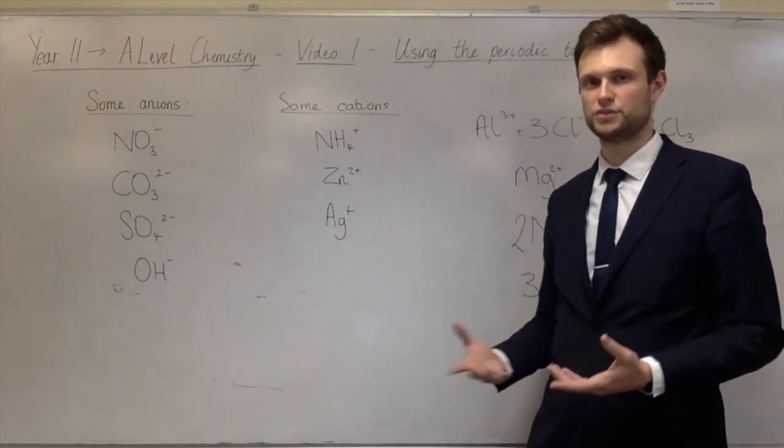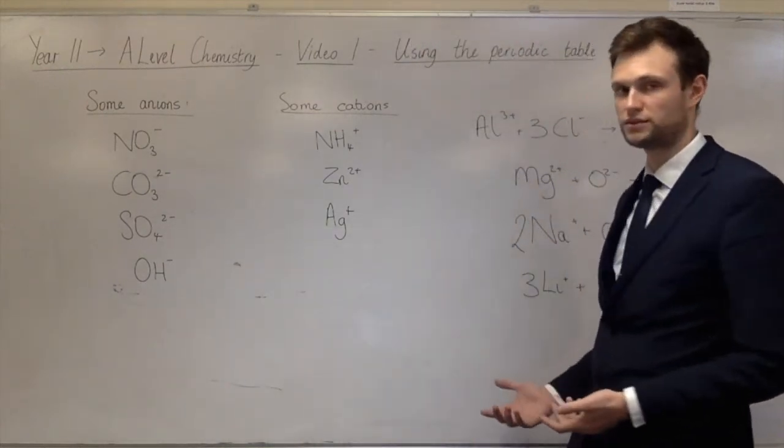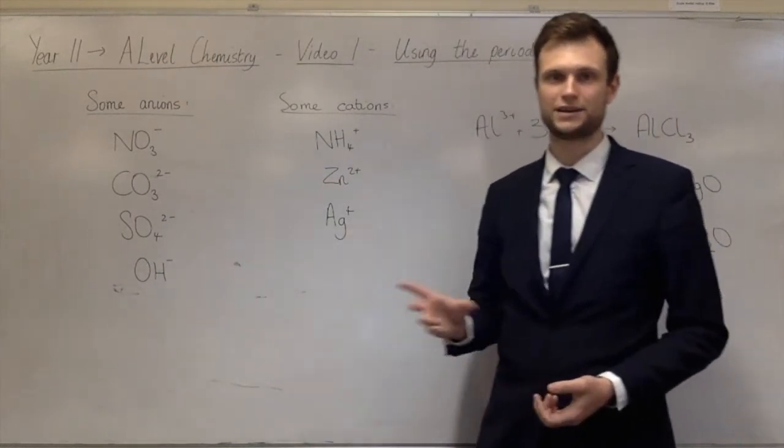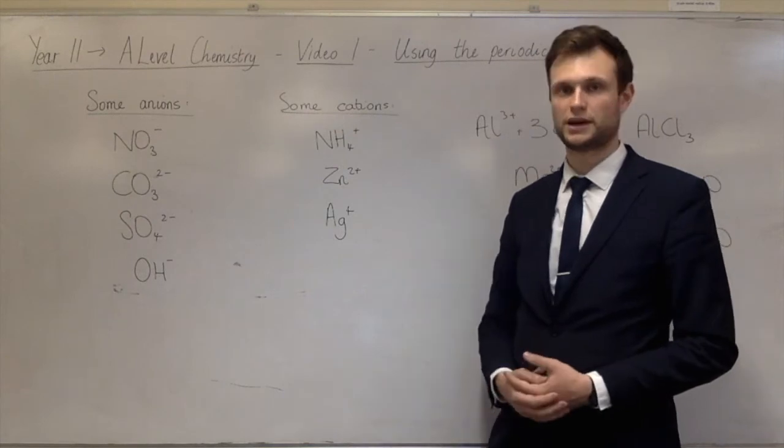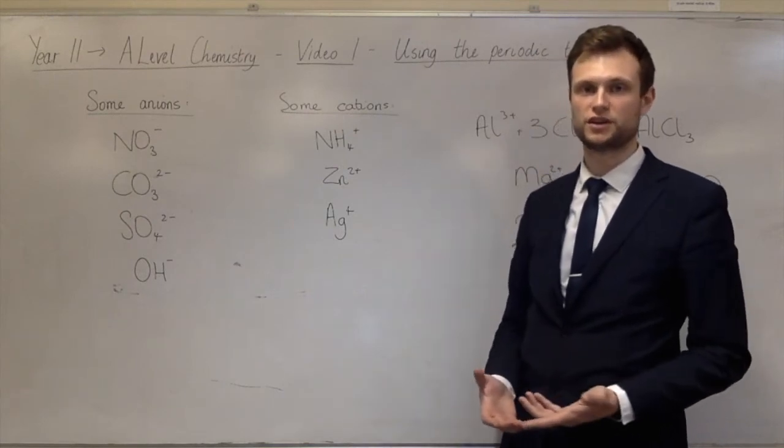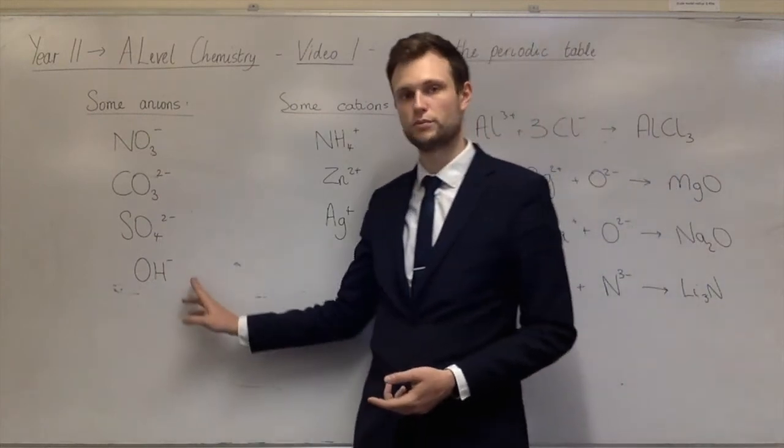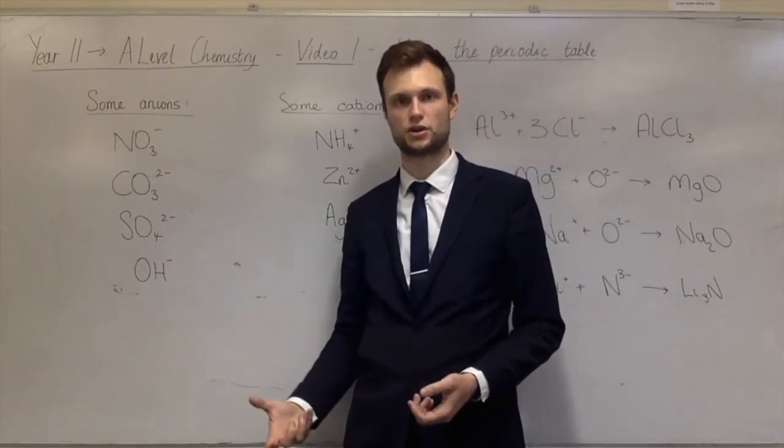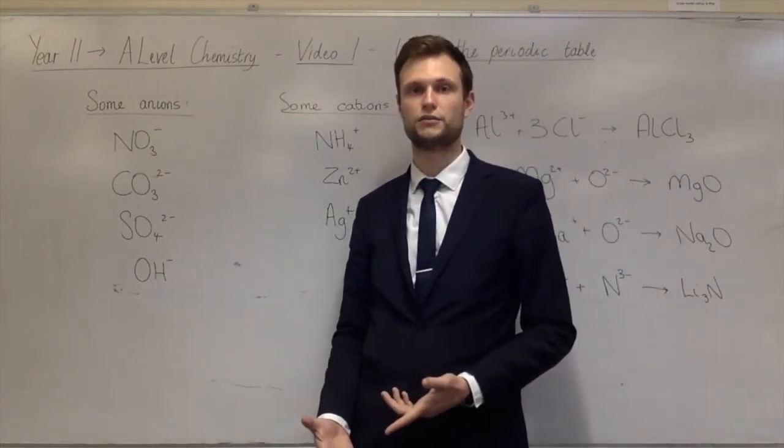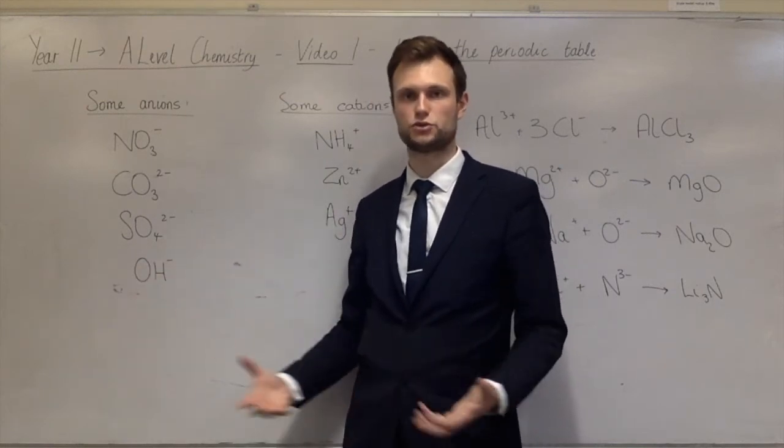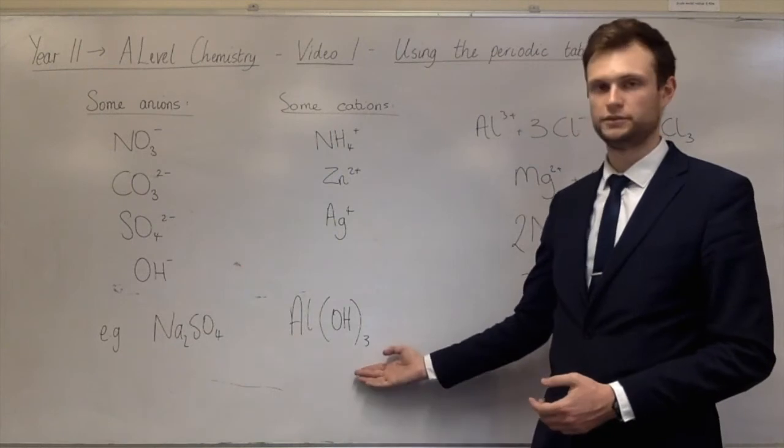You could also do the same thing using these complex ions. So if we had for instance sodium sulfate, sodium is one plus because it's in group one, sulfate is two minus, so that would be Na₂SO₄. And if you're doing for instance aluminium hydroxide, aluminium is three plus because it's in group three, hydroxide is one minus so you need three hydroxides. Now the way that you show that in the formula is by doing brackets three, so three hydroxide ions. And so it looks like this: Al(OH)₃.